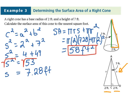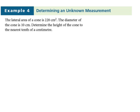The lateral area of a cone is 220 cm². The diameter of the cone is 10 cm. Determine the height of the cone to the nearest tenth of a centimeter. Let's take a look at the picture.